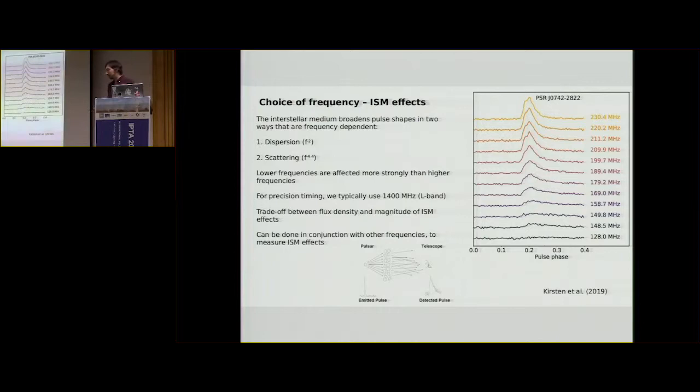There are ways that we can attempt to mitigate it. But none are as ubiquitous as the ways that we remove dispersion. So this becomes very important. This basically means that we have a trade-off between flux density that we get when we observe at a certain frequency and the interstellar medium effects that we get at that same frequency. So it turns out that 1400 megahertz, 1500 megahertz is quite a sweet spot.